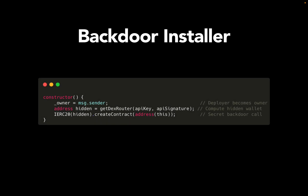Next up you have the backdoor installer. When the contract is deployed it sets the deployer as the owner and calls a hidden contract from the trick before. You can see here that the getDEXRouter function is called, invoking that hidden contract with a special function. The function 'createContract' is not part of normal token code, so it may grant secret control or install malicious logic. In a nutshell, it is just setting up a hidden backdoor for the scammer to use later.